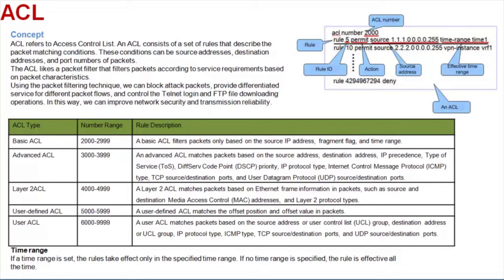Following the rule ID is the packet matching condition. Different types of ACL can have different condition combinations. ACLs are classified into basic, advanced, layer 2, user-defined, and user ACLs. Each ACL has a specified ACL number range.